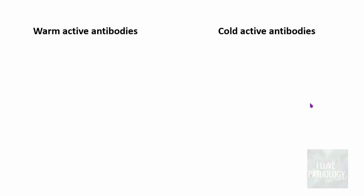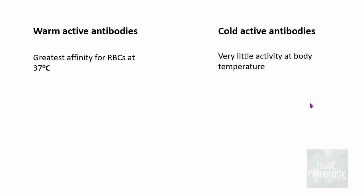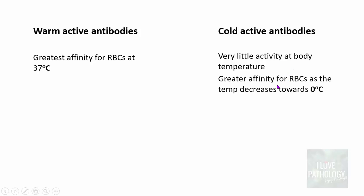Let us understand the differences between warm and cold active antibodies. Warm antibodies have the greatest affinity for RBCs at 37°C, whereas cold active antibodies have very little activity at body temperature but have greater affinity as the temperature decreases from 37°C towards 0°C. Warm antibodies are typically IgG whereas cold antibodies are typically IgM.